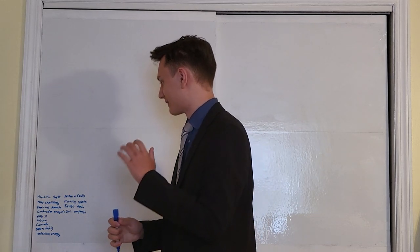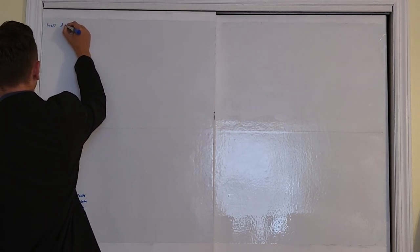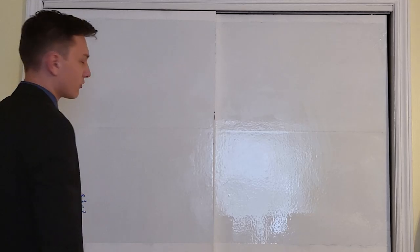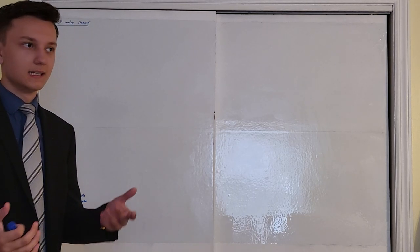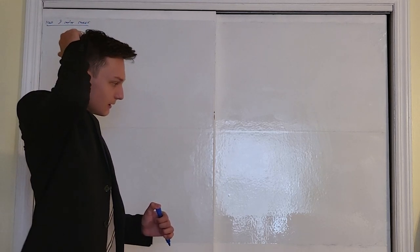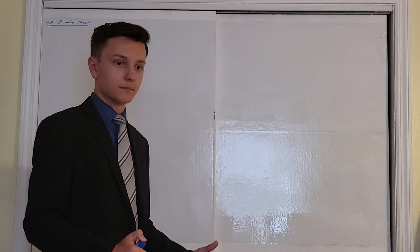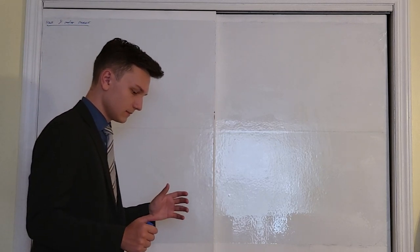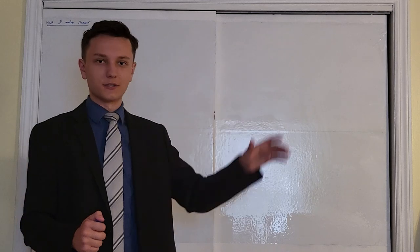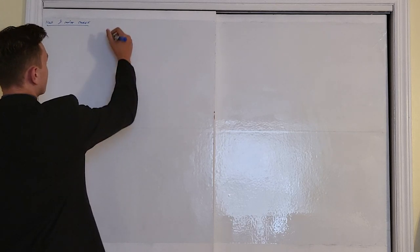We're going to start with topic 1.1 in AP Chemistry: mass and molar mass. Molar mass is a new word, but mass should already be familiar. We're used to measuring mass in grams and kilograms. Every scale in a chemistry lab measures in grams, not in ounces or pounds. Let me introduce a new unit to you: the unit of moles.